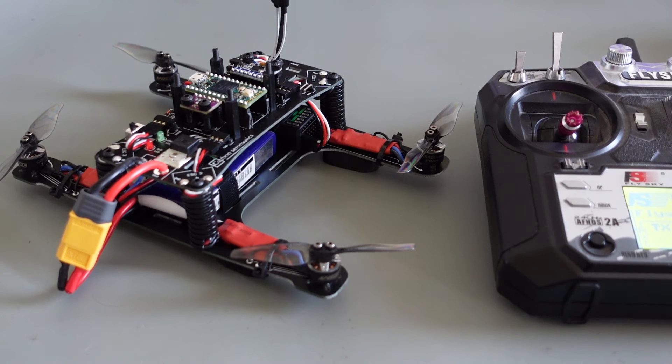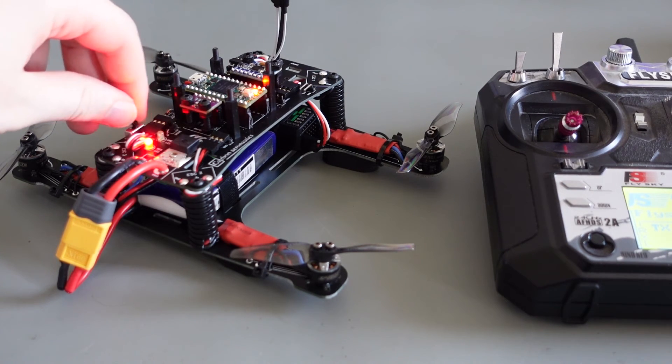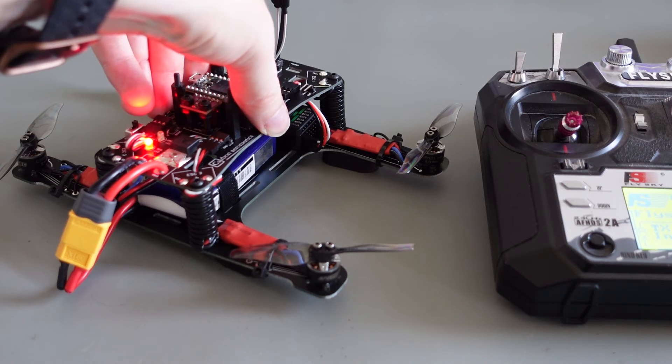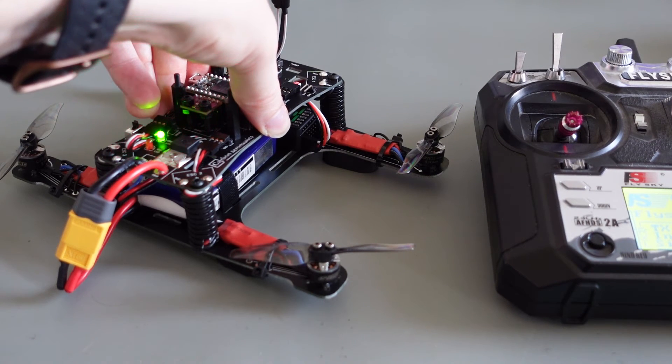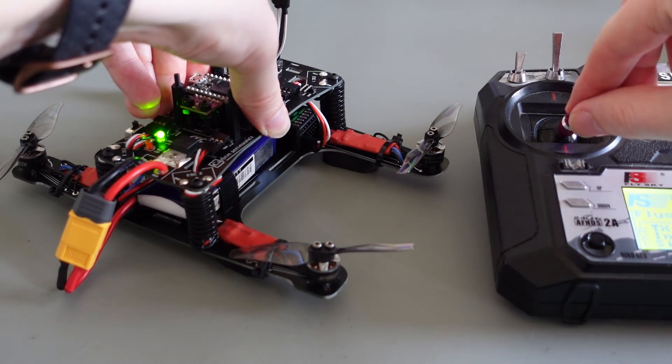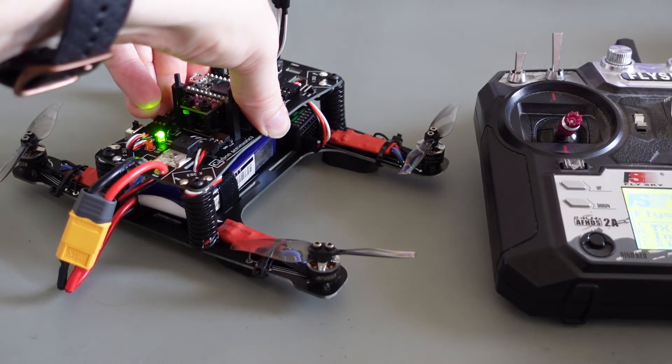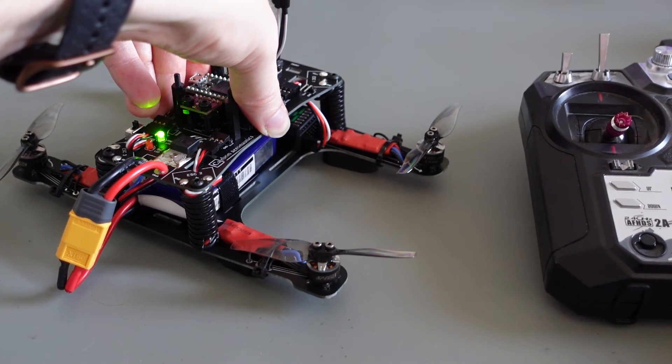You can now start the motors by moving the throttle stick softly up and down. After the beeps of the ESC, hold the quadcopter firmly with one hand and increase the throttle to test the flight controller.